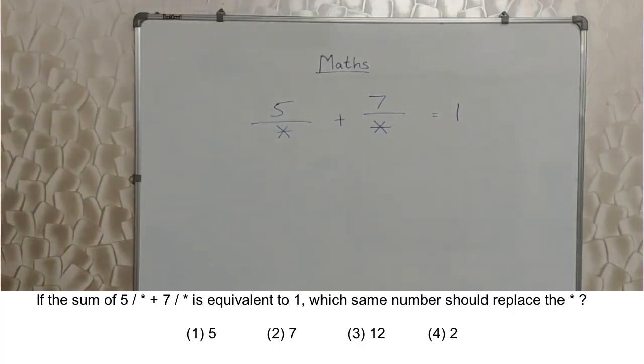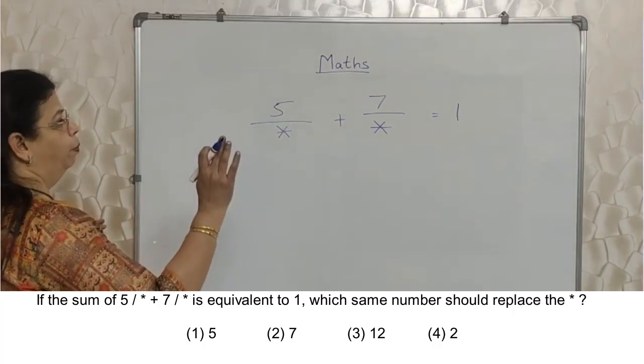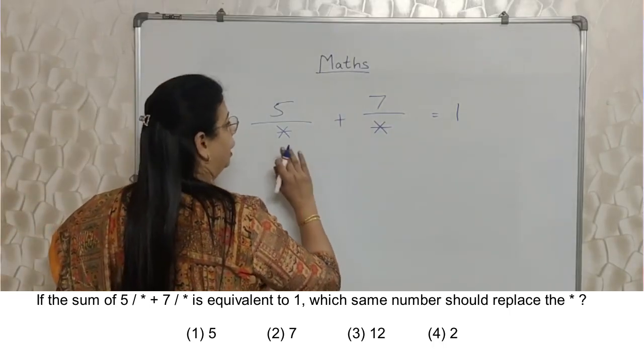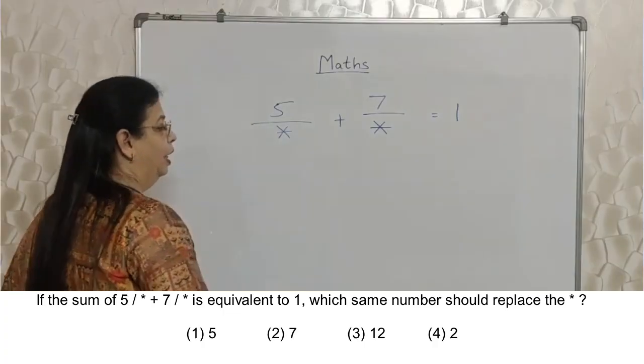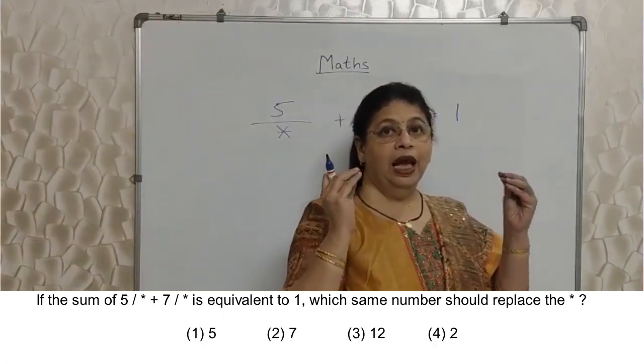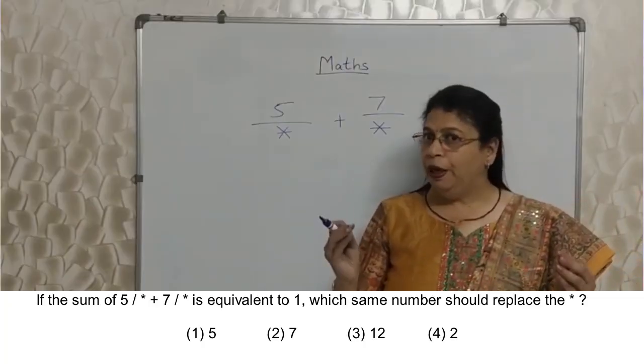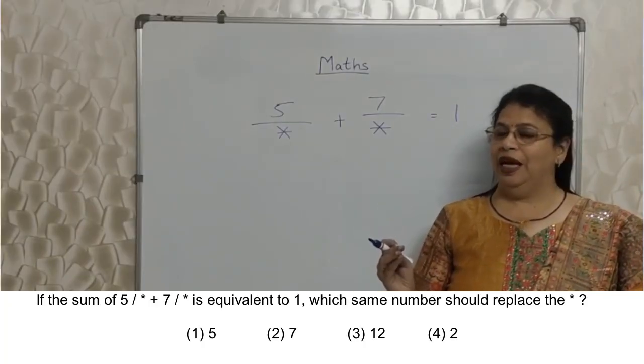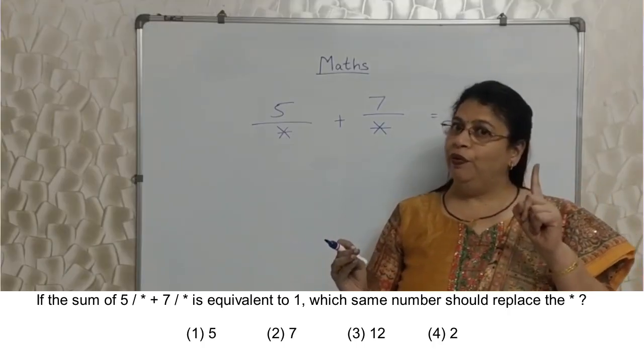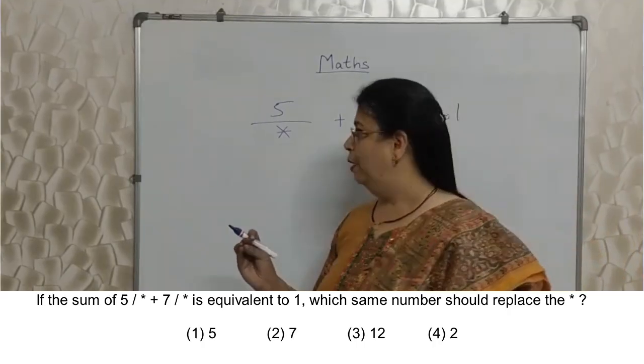Students, read the next sum properly: If the sum of 5 upon asterisk plus 7 upon asterisk is equivalent to 1, which same number should replace that asterisk? Here, students take the help of options and they try all the options and they spend a lot of time again. See, time is the scarce resource here. We must optimize the use of time. Nobody is going to give you even 1 minute more. Keep that in mind.